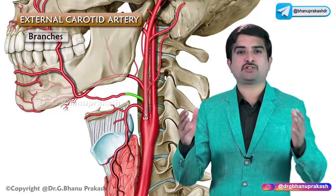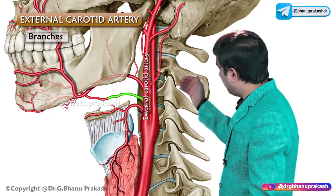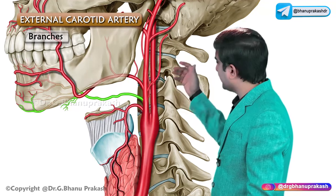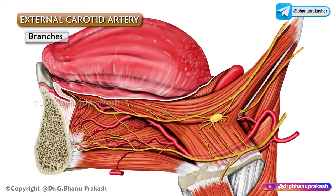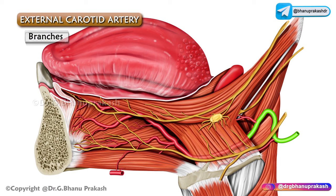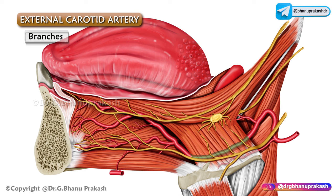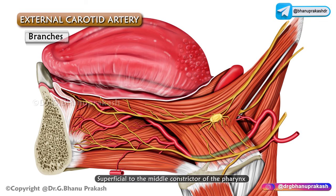The lingual artery arises from the external carotid artery opposite the tip of the greater cornu of the hyoid bone. It is tortuous in its course and is divided into three parts by the hyoglossus muscle. The first part lies in the carotid triangle, where it forms a characteristic upward loop crossed by the hypoglossal nerve; this lingual loop permits free movements of the hyoid bone. The second part lies deep to the hyoglossus muscle along the upper border of the hyoid bone, superficial to the middle constrictor of the pharynx.